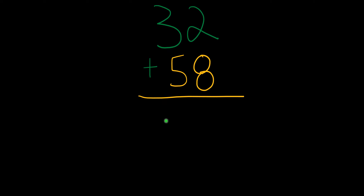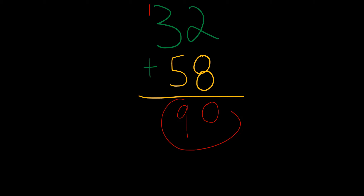So now we have 32 plus 58. The first thing I'm going to do is add 8 plus 2. 8 plus 2 is 10. I'm going to put the 0 here and carry the 1. So now we have to add 1 plus 3 which is 4, and then 4 plus 5, that would be 9. So our answer is going to be 90.